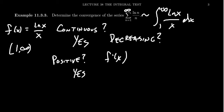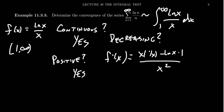By the quotient rule — low d high minus high d low, over the square of the bottom — the derivative of the natural log is 1 over x, which cancels with the x in the denominator. So that gives us 1 minus the natural log of x, all over x squared. To determine whether the function is decreasing, we want to find when this derivative is less than zero.